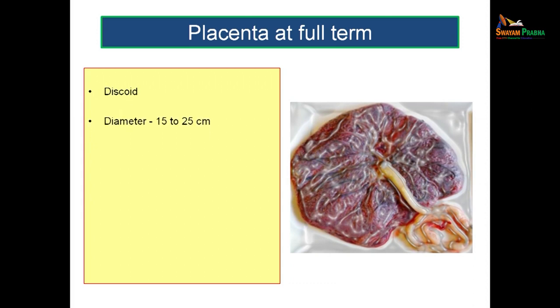At full term, the placenta looks like a disc — it is discoid. The diameter is roughly 15 to 25 centimetres, the thickness is roughly 3 centimetres, and the weight is roughly 500 to 600 grams. The ratio of placenta to fetus is 1 to 7. This placenta is expelled about 30 minutes after the birth of the child, which is why it is locally known as the afterbirth.